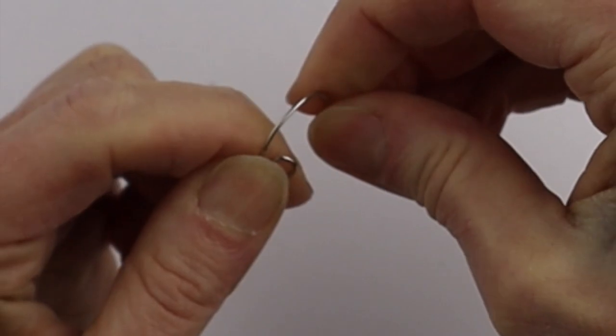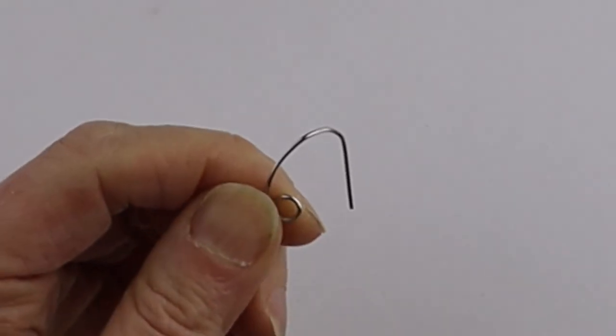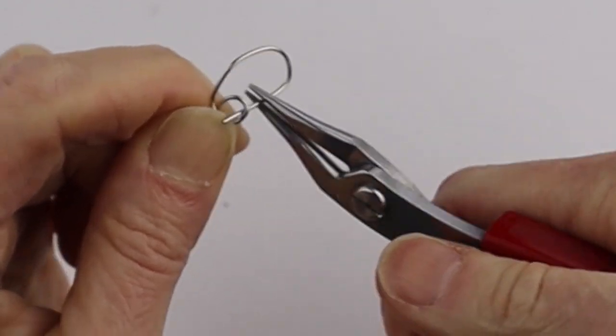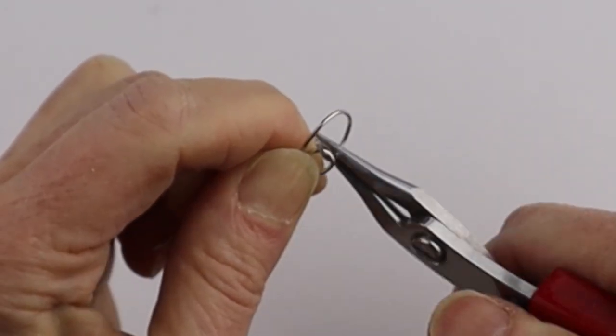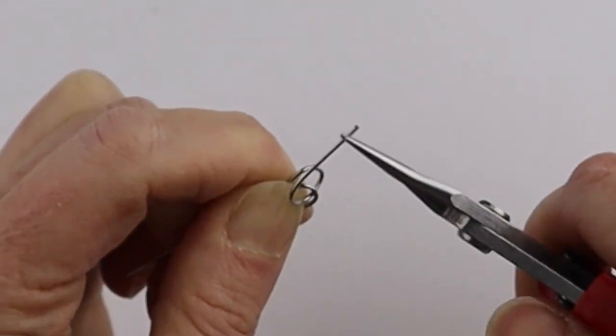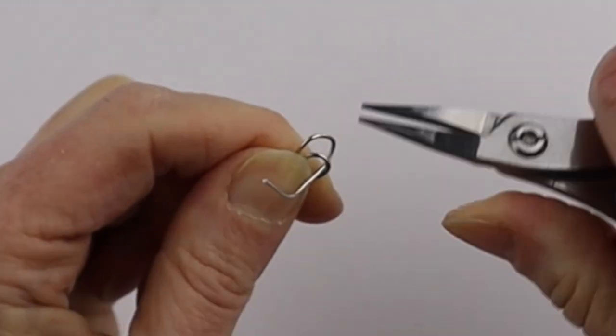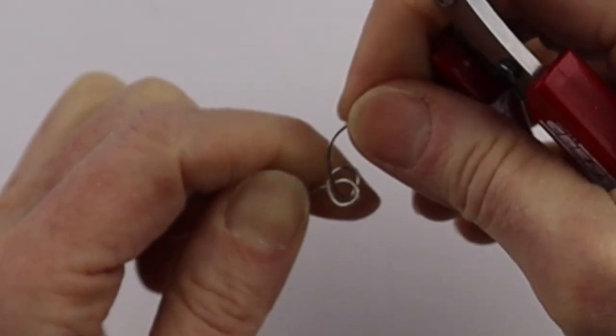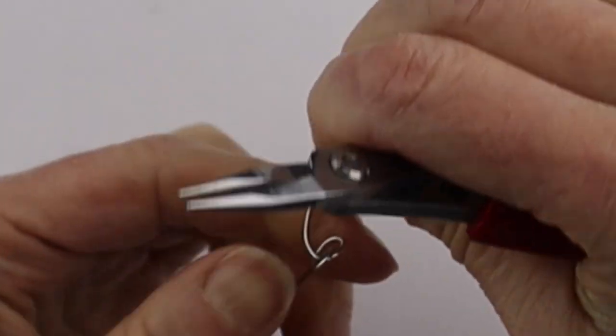So we're going to bend it around and we want to get our pliers to hold on to it. Just stick that through there and then we're going to just very slowly bring it through. And we're just going to rotate it with our kind of flick of the wrist there.